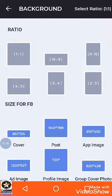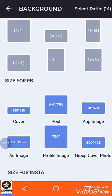Here you can find different ratios. The first section has general ratios related to general sizes. The second section is for Facebook — you can make a cover for a Facebook page or profile, and there are also options for post size, app image, ad image, profile image, and group cover photo.